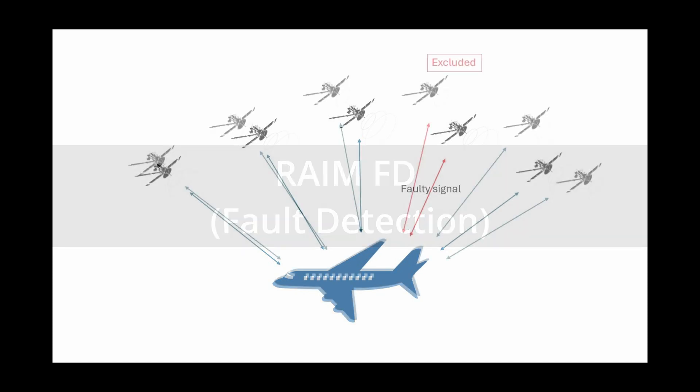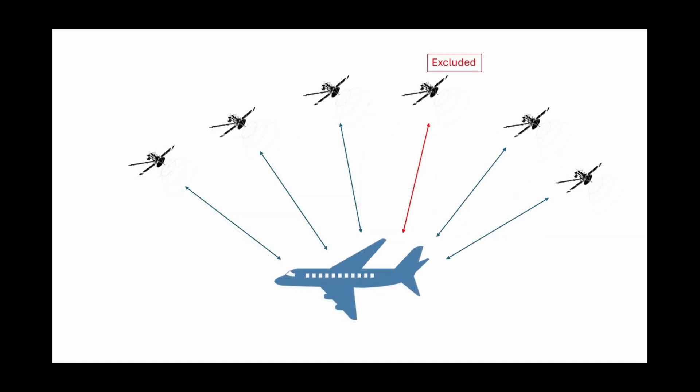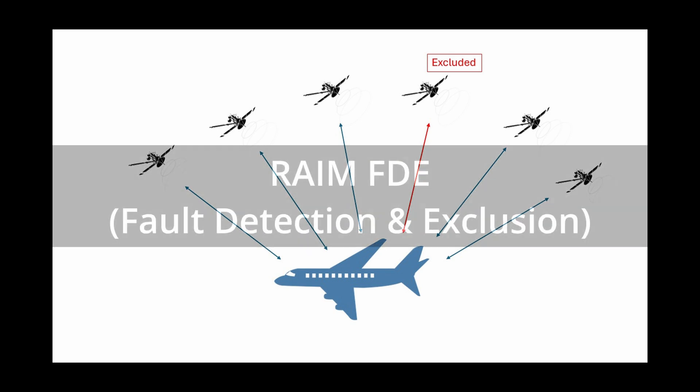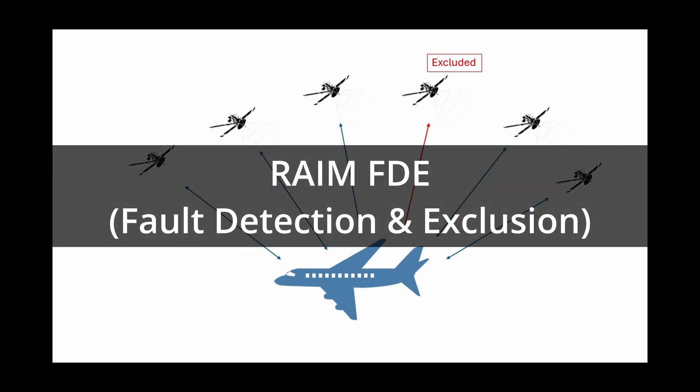If there is a sixth satellite signal available, then newer receivers can even exclude the faulty satellite and continue with the remaining five. This is called RAIM fault detection and exclusion.